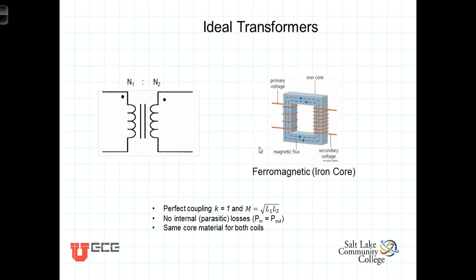An ideal transformer has as its symbol the two inductors, and then it typically will draw just a couple of parallel lines in there to symbolize that it is meant to be an ideal transformer.